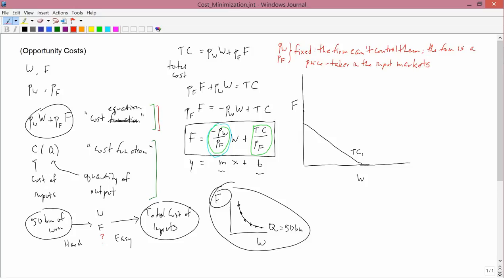In other words, the firm is a price taker in the input markets. By input markets, I mean the price of water and the price of fertilizer, because it's water and fertilizer that are the inputs to making corn. And by a price taker, I mean the firm can't control the prices. The firm, you can think of as being very small. And there might be lots of other firms that are bidding for water and fertilizer. And so nothing that this firm ever does is going to change the price of water and the price of fertilizer.